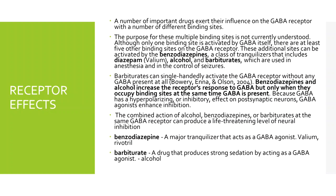A benzodiazepine is a major tranquilizer that acts as a GABA agonist — examples are Valium and Rivotril. A barbiturate is a drug that produces strong sedation by acting as a GABA agonist. I hope you understand the differences and importance of these types of substances.